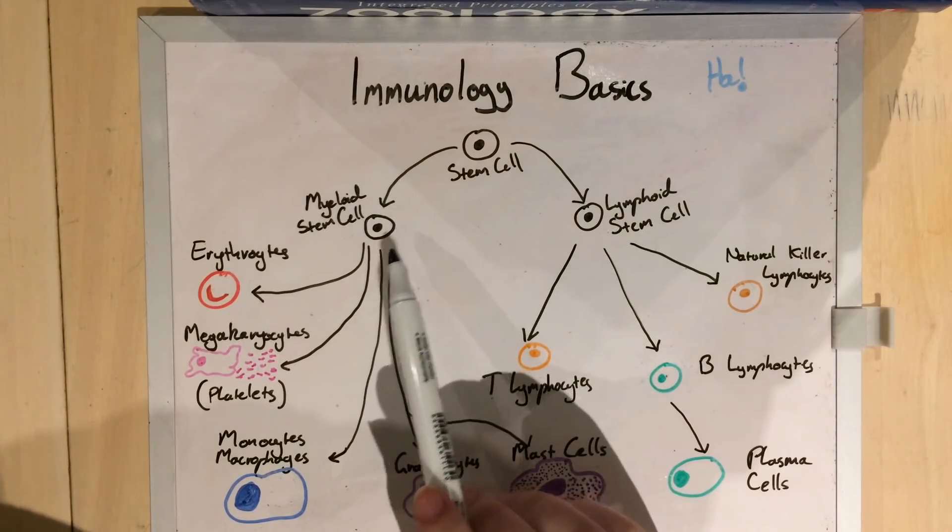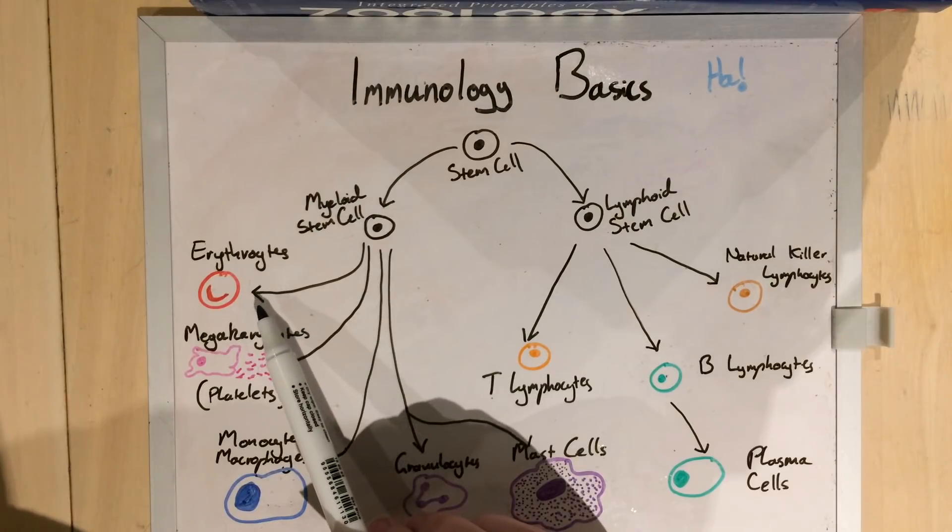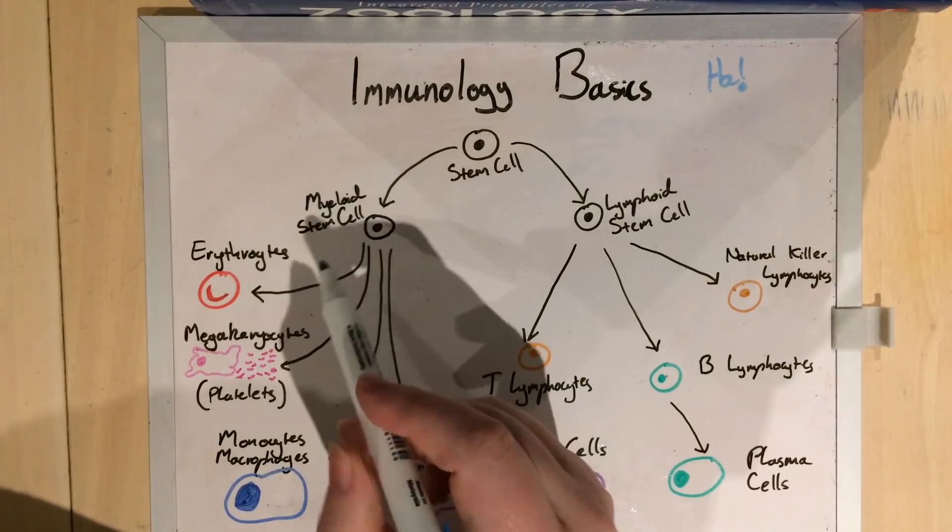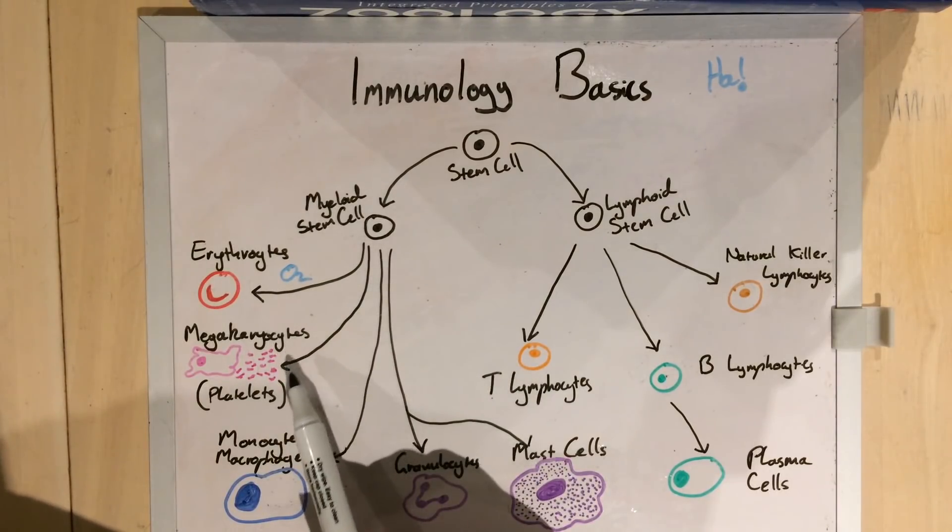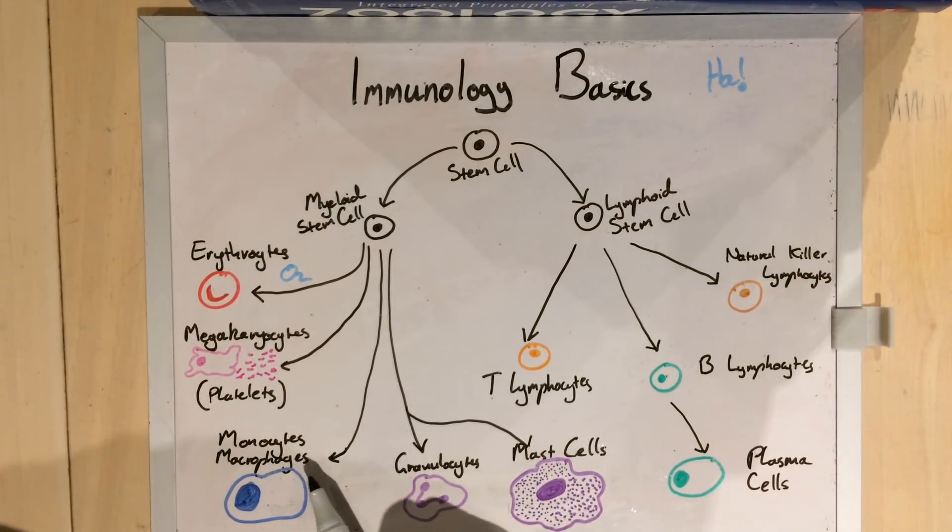On the lymphoid side, we have our erythrocytes, which are our red blood cells responsible for carrying oxygen around the body. Our megacaryocytes, which break up to form platelets to stop you bleeding to death on a regular basis. Our monocytes and macrophages, which eat up cellular debris and things like bacteria.